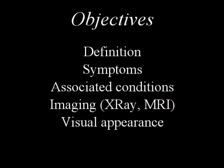This presentation is going to go through the definition of osteoarthritis — what the condition actually means and what we are referring to when we talk about osteoarthritis of the joint. I'm going to go through some of the symptoms, associated conditions, and also what we call the differential diagnoses — the conditions that mimic osteoarthritis. And finally, some of the imaging features on x-ray, MRI scan, and also the visual appearance of osteoarthritis.